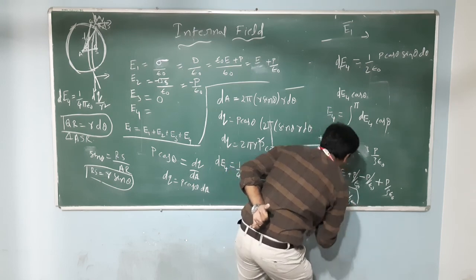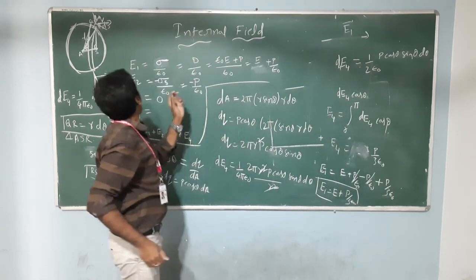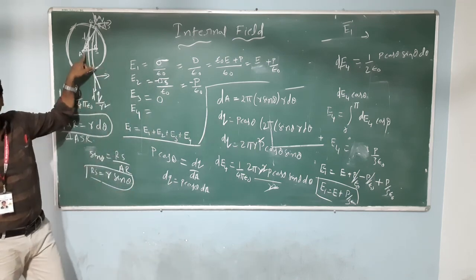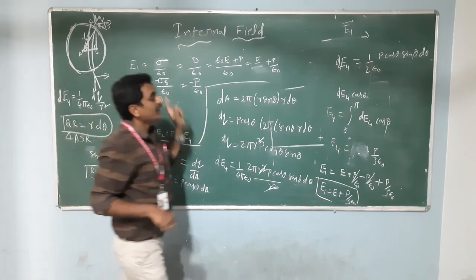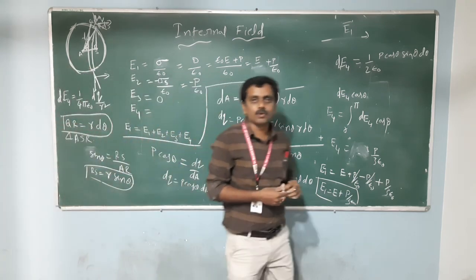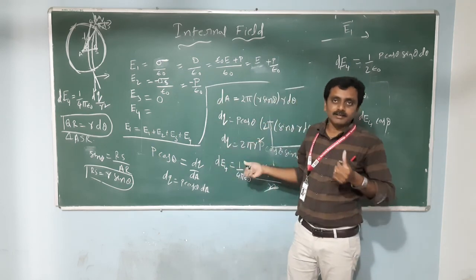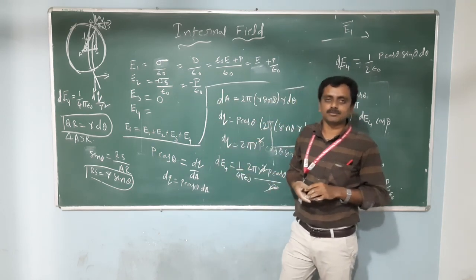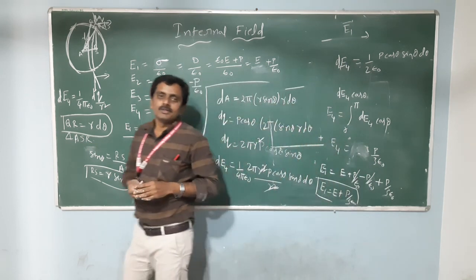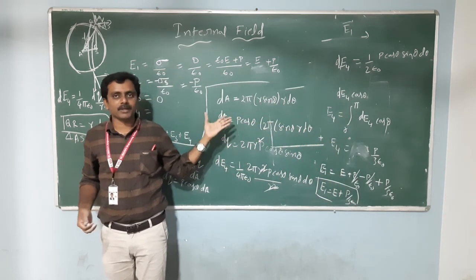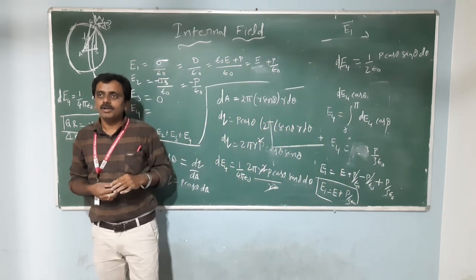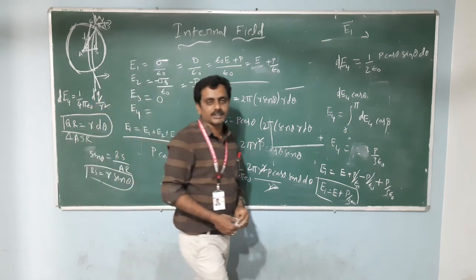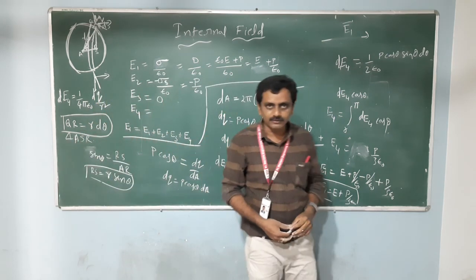This is the local field acting on atom A inside the material. By using this local field, we can derive the Clausius-Mossotti equation. The Clausius-Mossotti equation relates the macro-particle properties to the micro-particle properties. Tomorrow we will discuss the Clausius-Mossotti equation. Thank you.